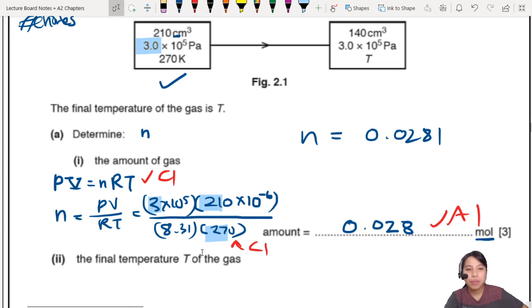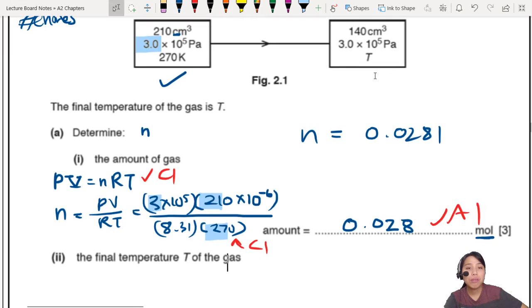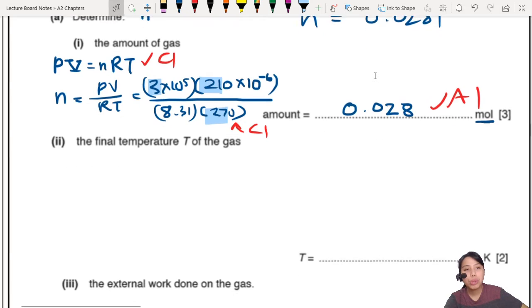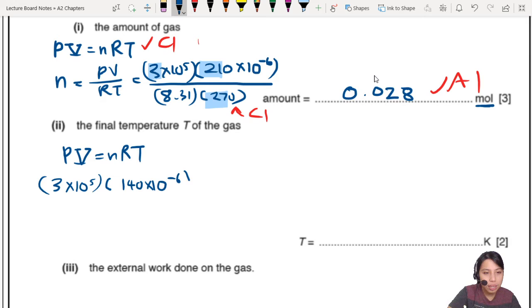The final temperature of the gas. How are we going to find the final temperature of the gas? You could use ratio of Charles' Law, because pressure is constant. Pressure and moles are constant. But I will show you also another method where you just plug in everything into PVNRT again. So you can either use the ratio method or this method, which is a little bit longer, I guess. So what you got to do is, plug in the pressure, which will be 3 times 10 to the 5.